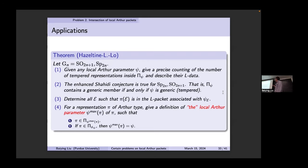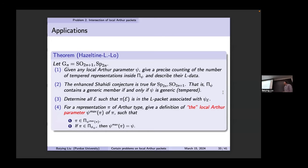There are many applications. First, for any local Arthur parameter, we give a precise counting of the number of tempered representations in the Arthur packet. Since the GGP problem for tempered packets is proved, for non-tempered packets the number of tempered representations is expected to play a role in the non-tempered GGP. We prove the enhanced Shahidi conjecture for these two groups — unconditionally. As an Arthur packet naturally contains the L-packet in the middle, we characterize all data giving representations in this L-packet.